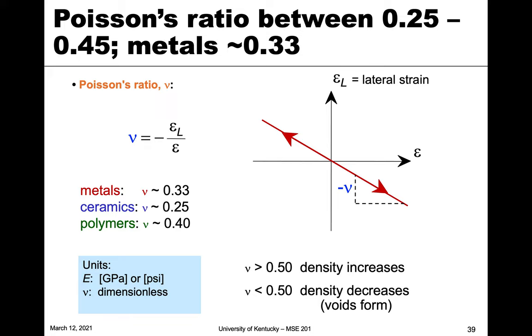And so typical values for Poisson's ratio are between 0.25 and 0.45. And metals are somewhere right in the middle, right around one third for Poisson's ratio. And then ceramics can be a little lower, polymers can be a little higher.